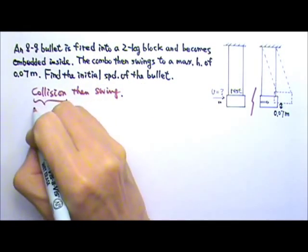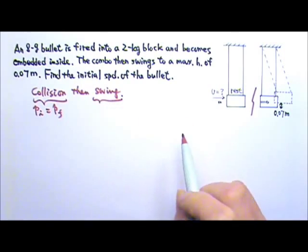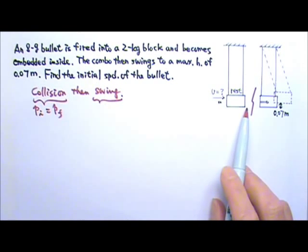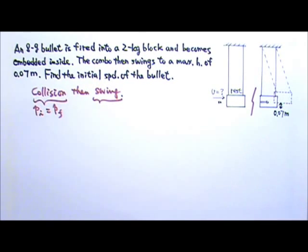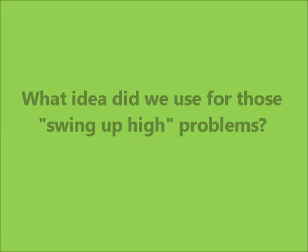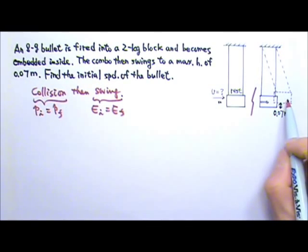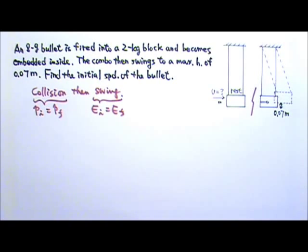For collision, we can use the conservation of momentum. For the swinging part, do you remember doing problems like Tarzan grabbing onto a vine and swinging up high? What idea did we use for those problems? We use the conservation of energy. If we ignore air resistance and friction, the total initial mechanical energy would equal to the total final mechanical energy. So we have to do this problem as a two-part problem.